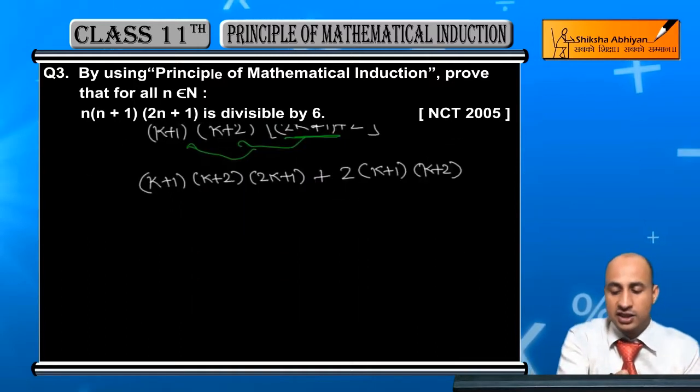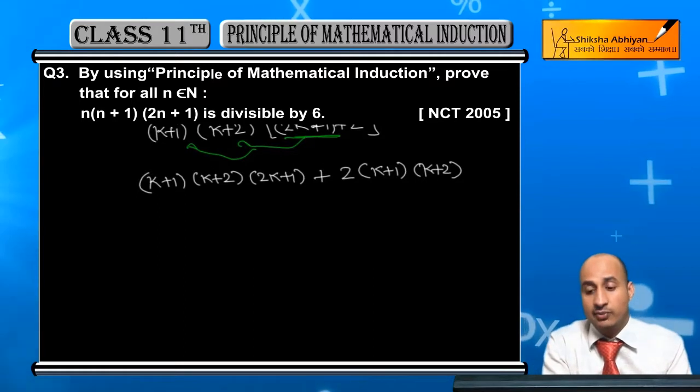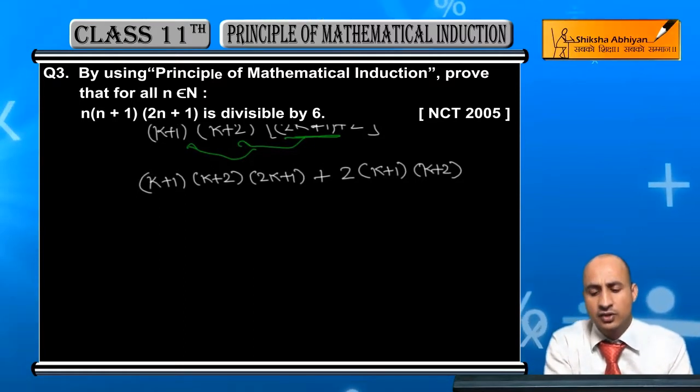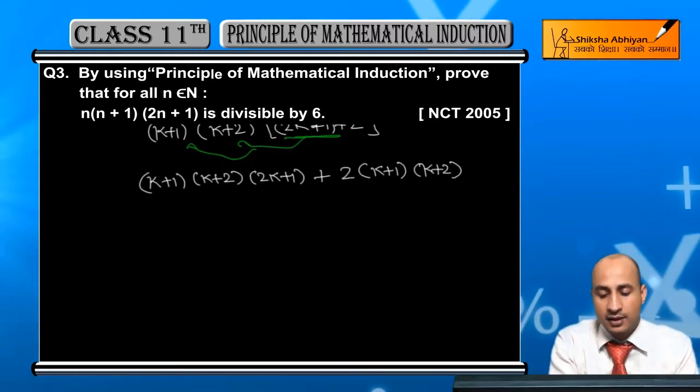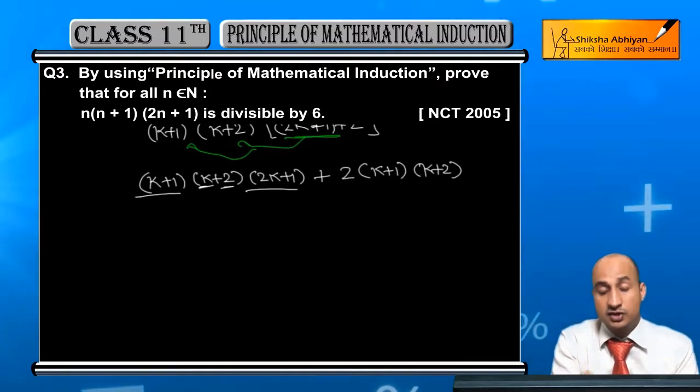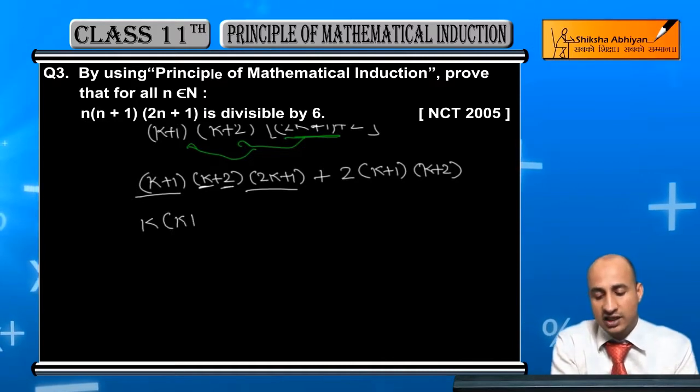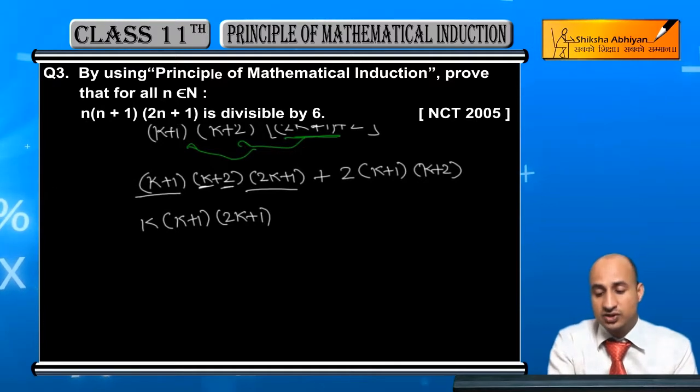Further, now I can take K plus 2 and multiply. So this will become: in these two brackets, first when I multiply 2 by K, I will get K into K plus 1 into 2K plus 1.